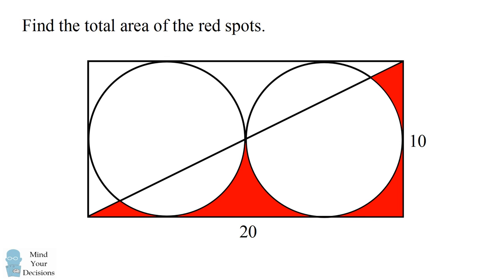Hey, this is Presh Talwalkar. Can you find the total area of the red spots? The diagram involves a rectangle with dimensions 10 and 20. The rectangle has one of its diagonals connected. Inside the rectangle are two circles of equal size,